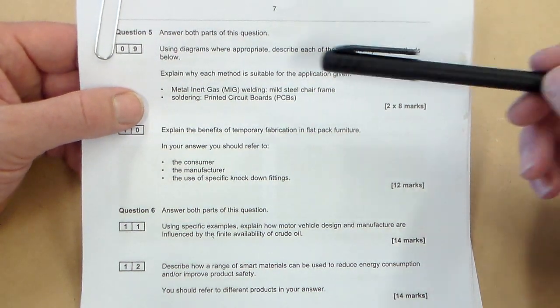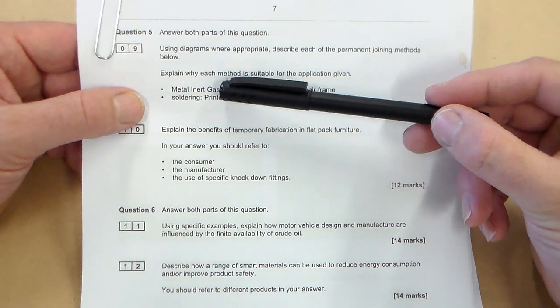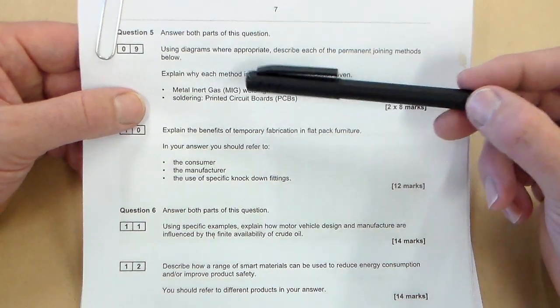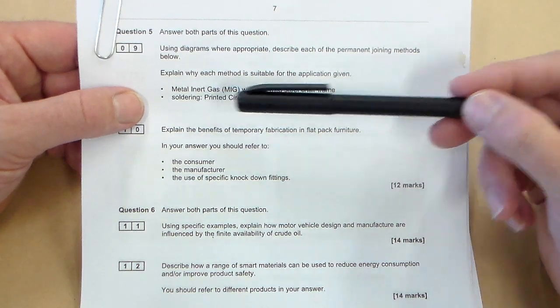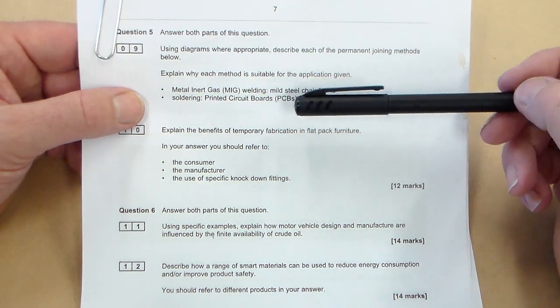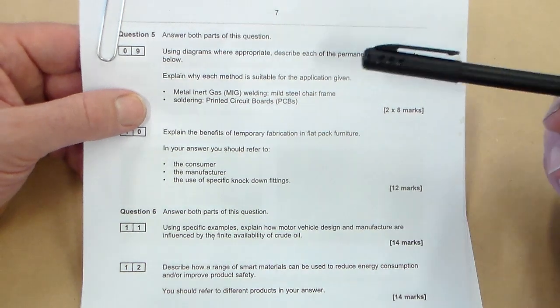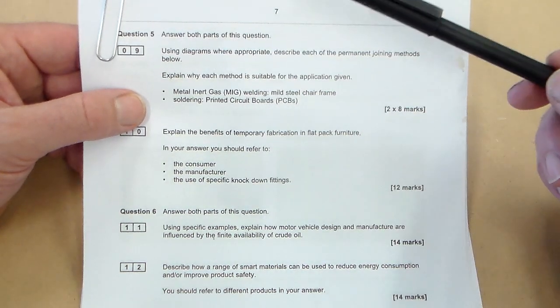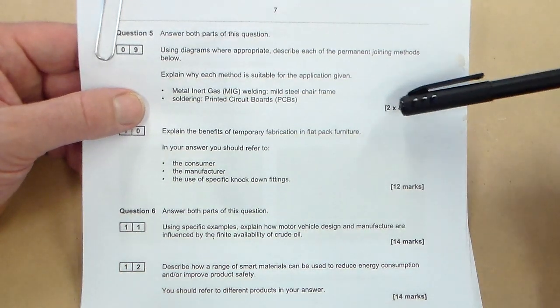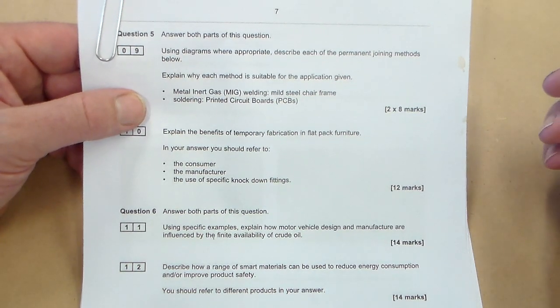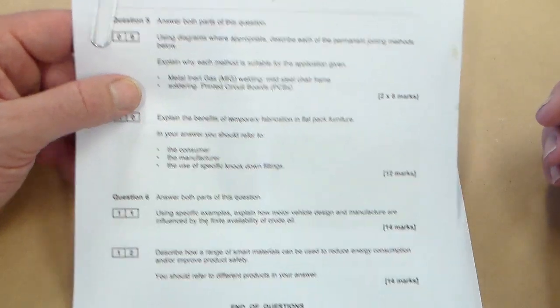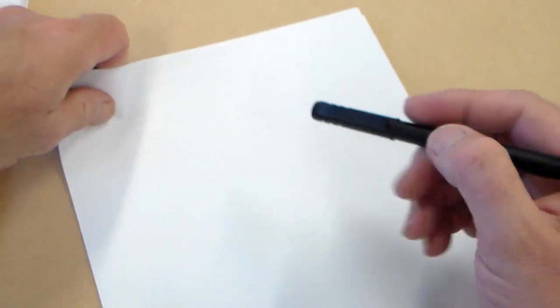So it's a joining method and an application. The first one is MIG welding, metal inert gas welding, and a mild steel chair frame. The second one is soldering PCBs, printed circuit boards. It says diagrams where appropriate, and it's two times eight marks, so eight marks for each example. We're going to start that off.